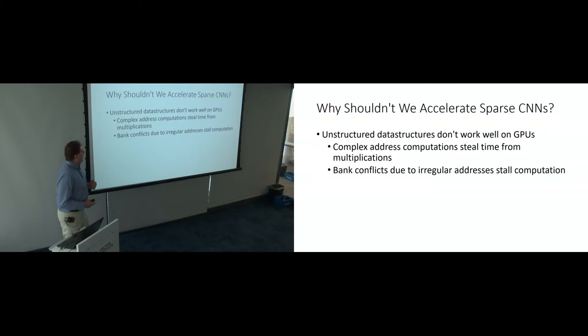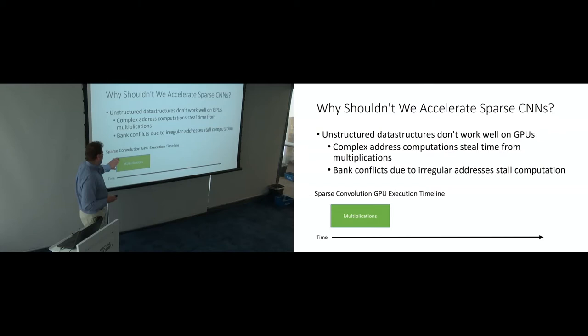And the reason for that is that unstructured data doesn't work that well on GPUs. You've got complicated address computations that steal time from your multiplication. Your GPU is spending more time figuring out where is the data rather than actually doing multiplications. So this costs you some of your benefit, maybe all your benefit, from getting rid of multiplications. And a GPU is set up for really very regular memory accesses where it can get data to all the compute units if the data is laid out nicely, so it all comes from different banks and goes to all the compute units. If it's not laid out nicely, not only does it take you longer to figure out where your data is, you may not actually be able to access it all in the same cycle because of hardware limitations that you can't get rid of.